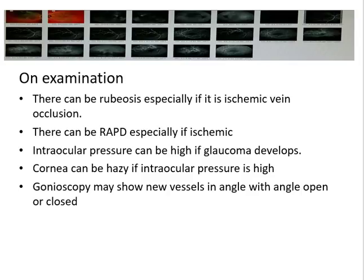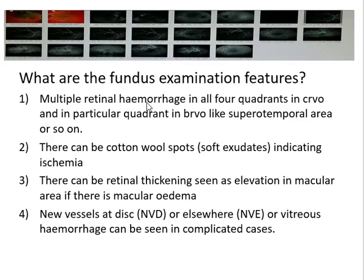On fundus examination, multiple retinal hemorrhages can be seen in all four quadrants in central vein occlusion, or in a particular quadrant — such as the supero-temporal or infero-temporal area — in branch retinal vein occlusion. There can be cotton wool spots, nerve fiber layer changes, and retinal thickening seen as macular elevation. Neovascularization at the disc or elsewhere and vitreous hemorrhage can also be seen in complicated cases.